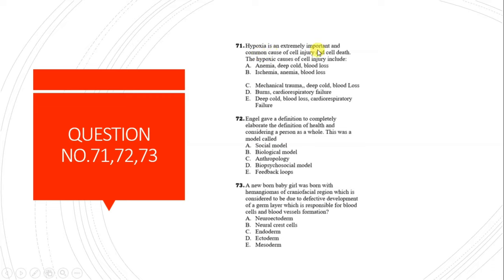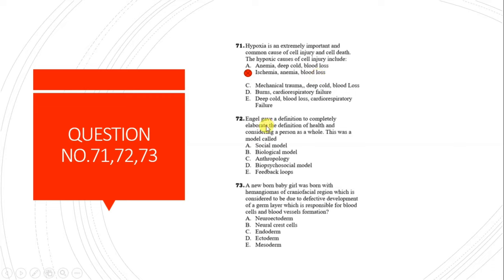Question 71: Hypoxia is a common cause of cell injury and death. The hypoxic causes of cell injury include ischemia, anemia, and blood loss. In ischemia there is blockage of blood supply, causing oxygen starvation. In anemia there is decreased ability of red blood cells to carry oxygen. Blood loss decreases the volume of blood, all leading to hypoxia.